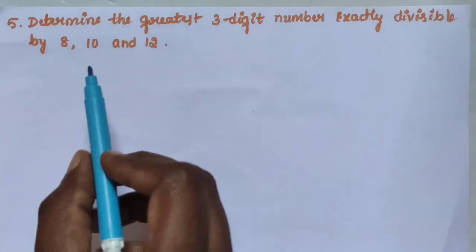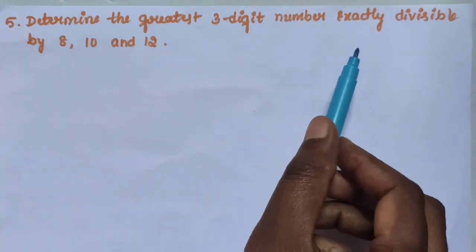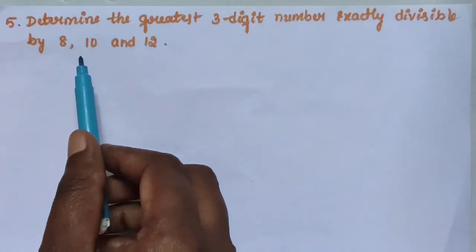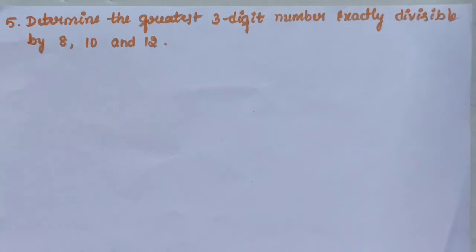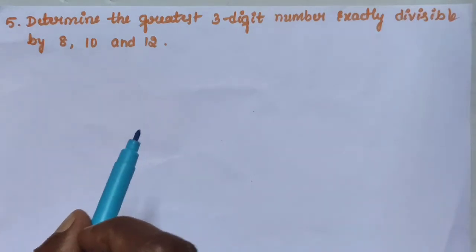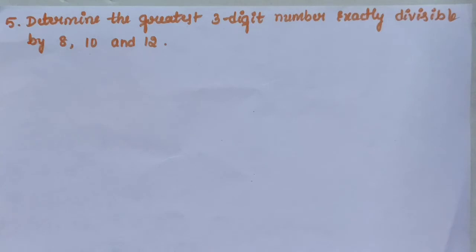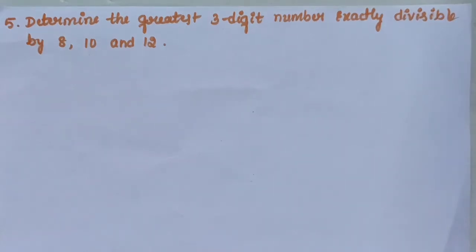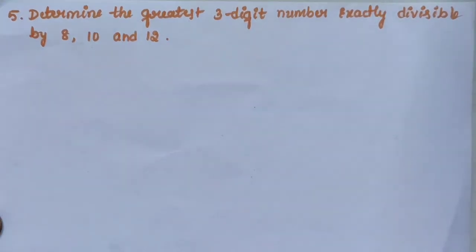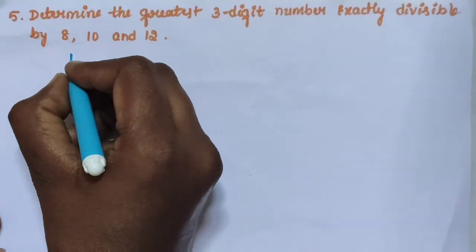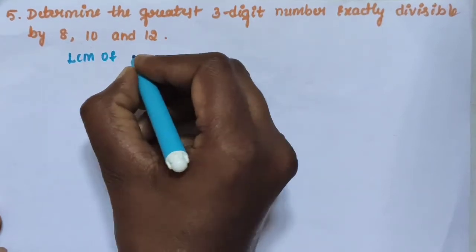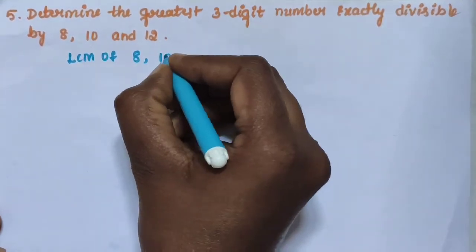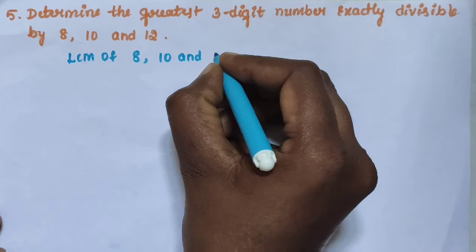Question number 5: Determine the greatest 3-digit number exactly divisible by 8, 10 and 12. First we find the LCM of 8, 10 and 12.